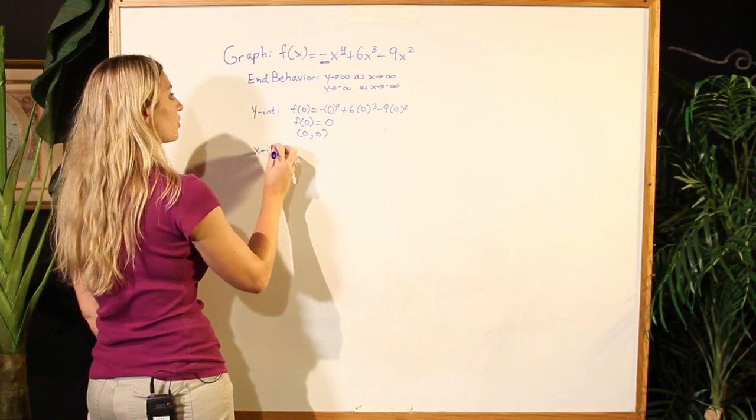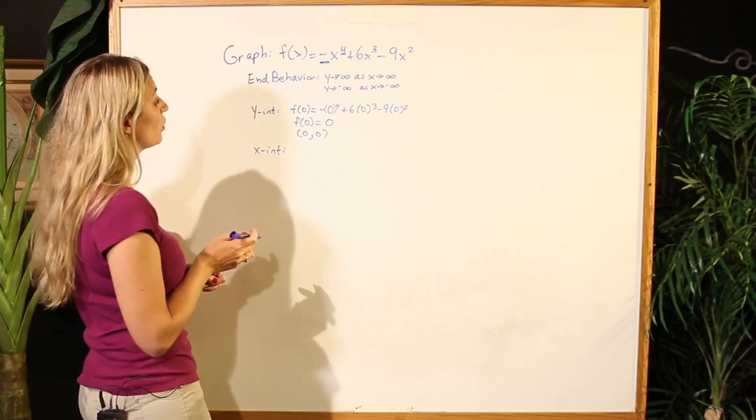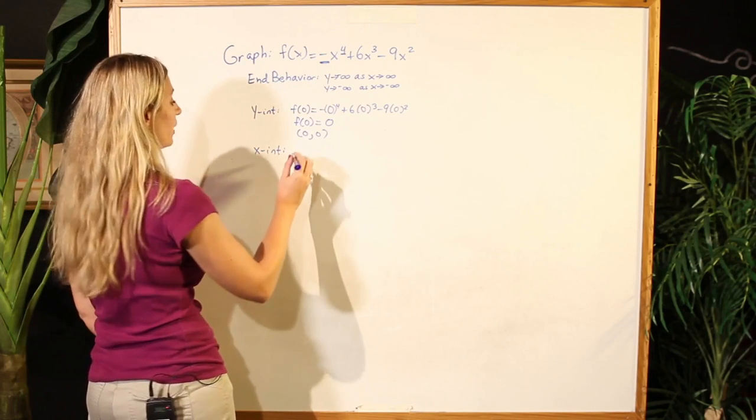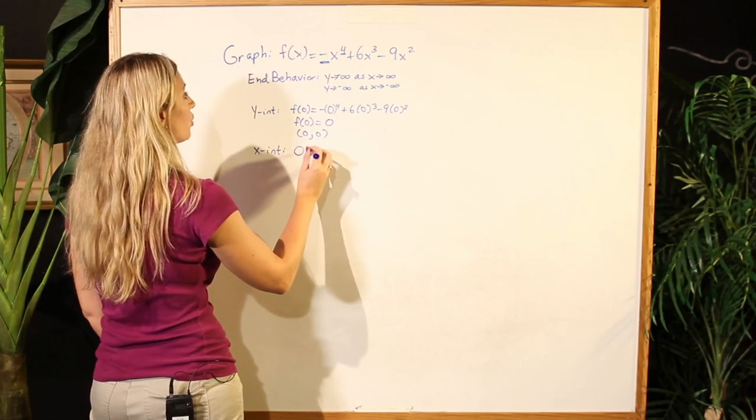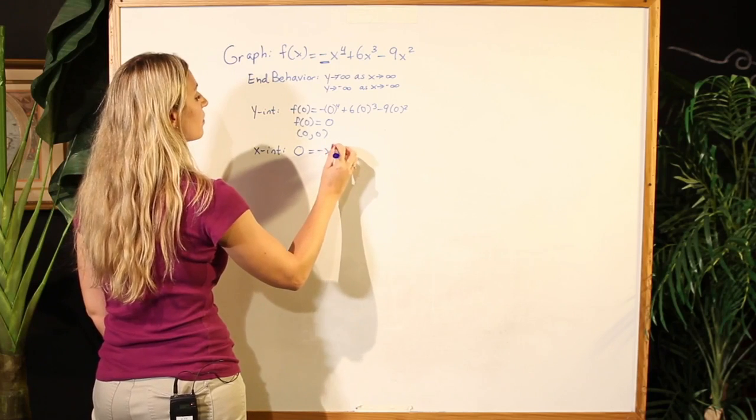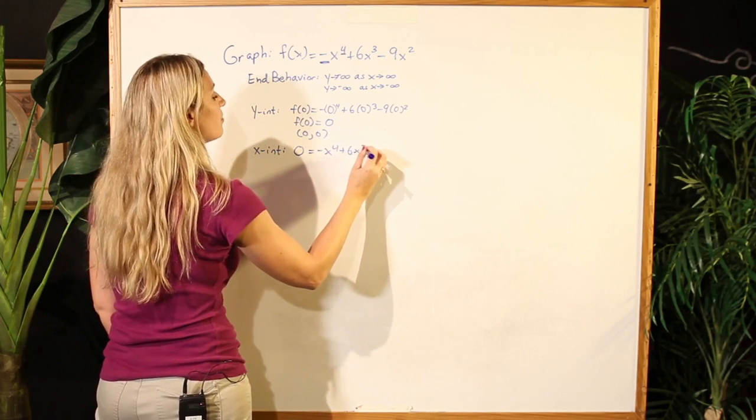Now, in order to determine our x-intercepts, we need to go through and do some factoring. We will set our polynomial equal to 0 in order to make this happen.